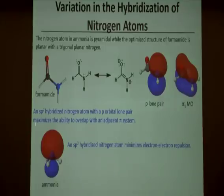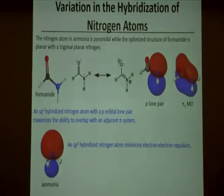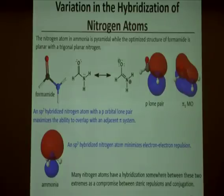The ammonia case has the SP3 hybridized lone pair. VSEPR predicts this well because a hybridization that puts the lone pair in an SP3 orbital minimizes electron-electron repulsion. P orbital lone pairs maximize conjugation with pi systems, while tetrahedral electron geometries with an SP3 lone pair allow the N-H bonds to get as far apart as possible. These are two opposing effects, and many nitrogen atoms have a hybridization somewhere between SP2 and SP3 — a compromise between maximizing conjugation and minimizing steric interactions.